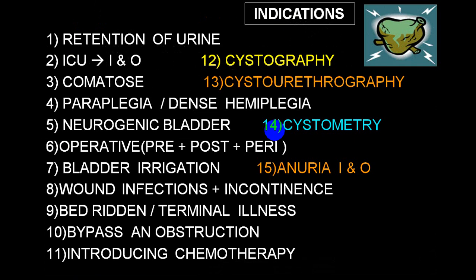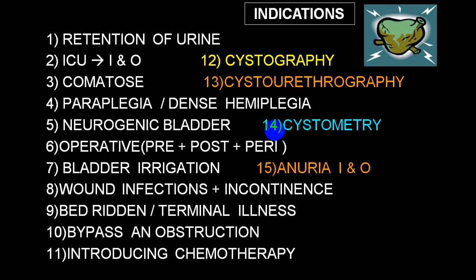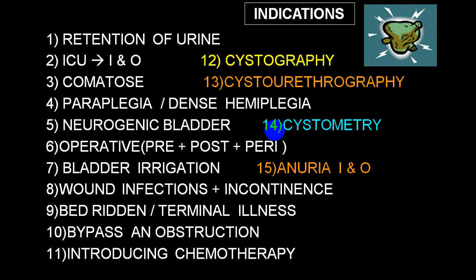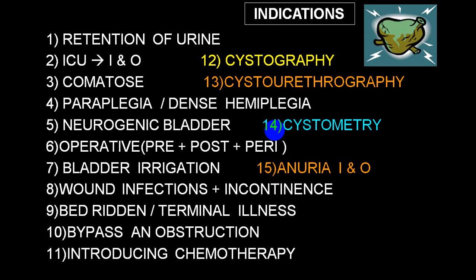The most common indication is retention of urine — it can be acute, chronic, or acute on chronic. Catheterization is very commonly done in ICU settings to calculate input/output charts, in comatose patients to prevent complications from retention or involuntary passage of urine and overflow dribbling, and in persons who cannot mobilize, such as those with paraplegia, hemiplegia, neurogenic bladder (upper motor neuron, lower motor neuron, involuntary bladder, or cortical damage), and anuresis.